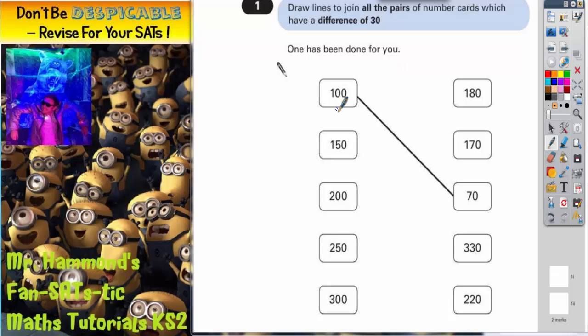So you can see that 100 and 70 have been joined, and that's because if you do 100 take away 70, you get 30. Now the easiest way to do this is to go down the left-hand side and take each one at a time, so that we're not being random - we're doing it systematically.